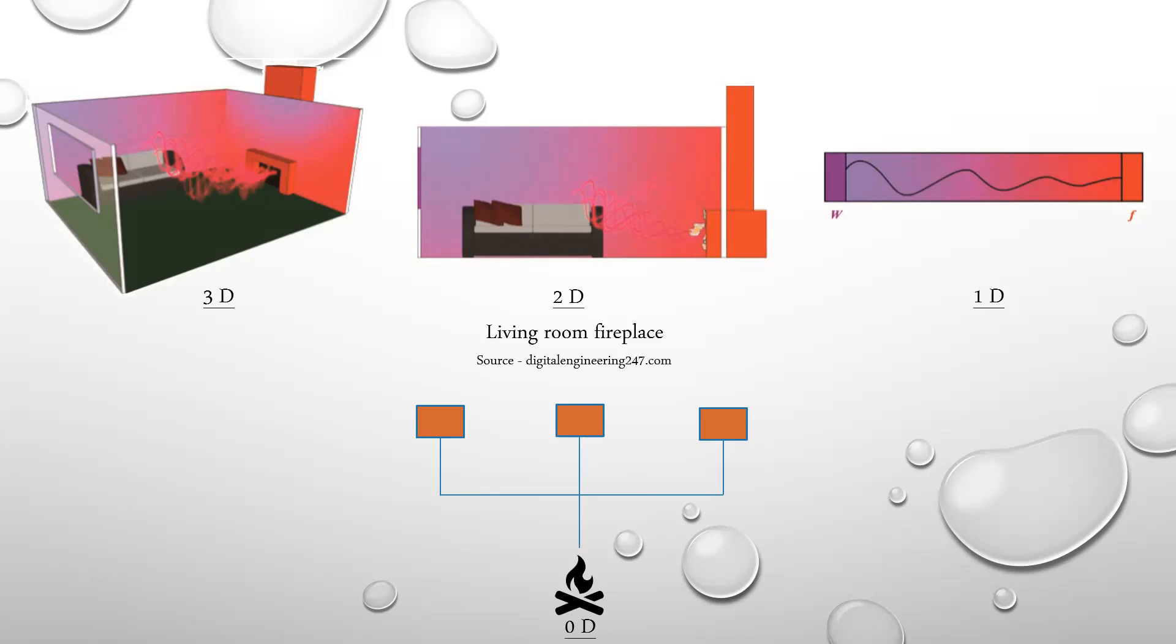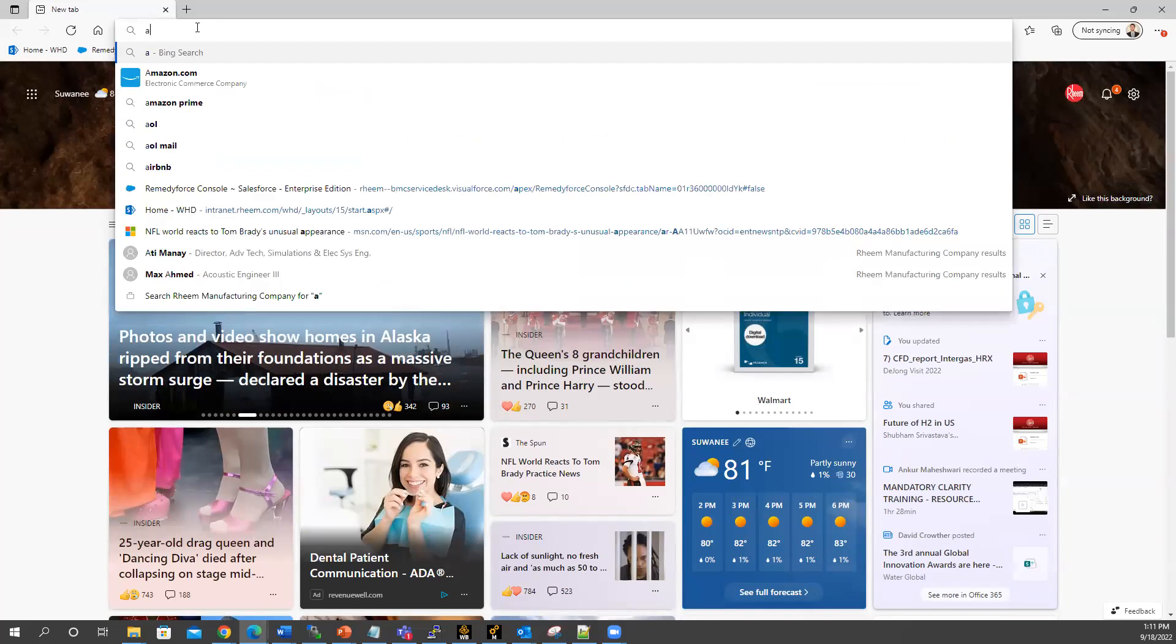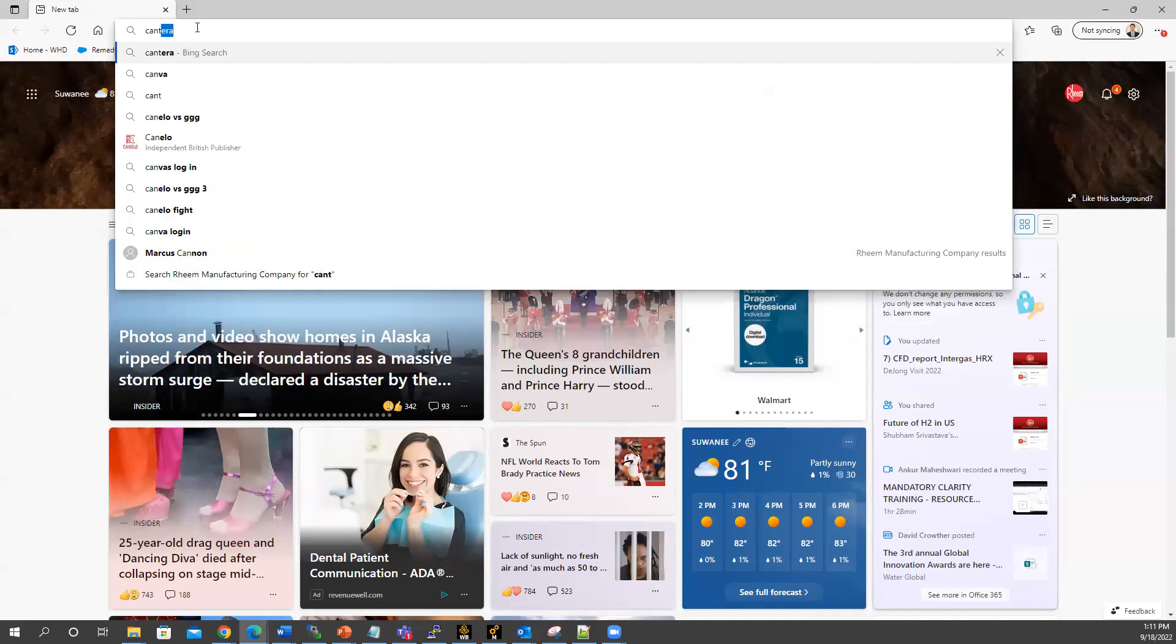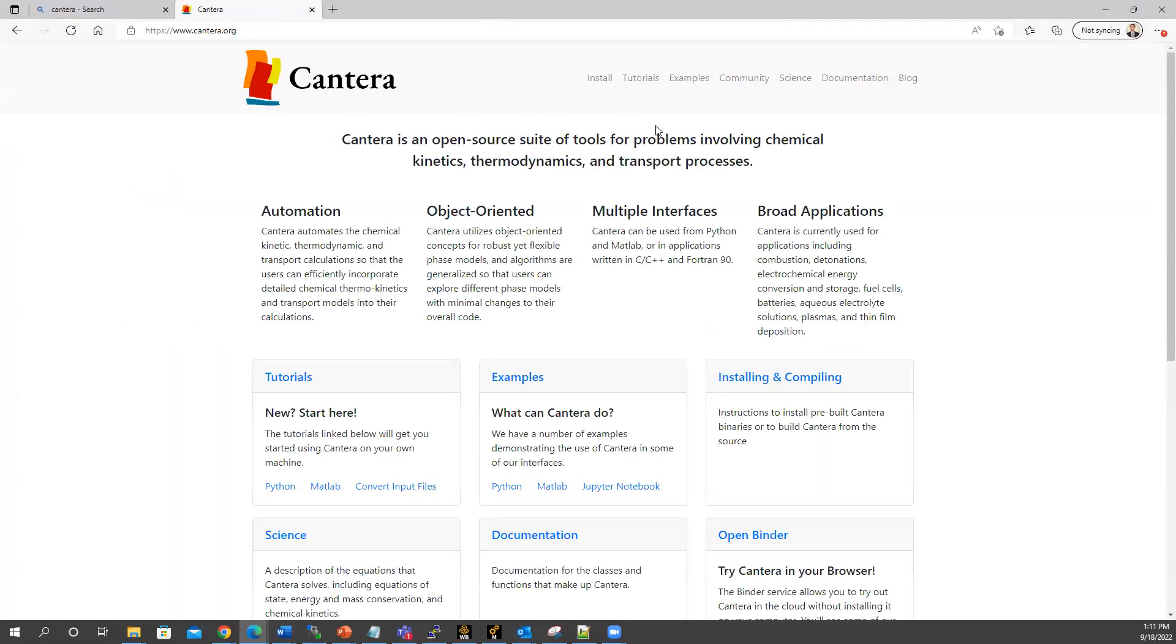Now let us look at the Cantera website, which contains some solid examples that may give you an idea of what we just discussed. So let's open a browser and let's search Cantera. Okay, so that's the first website here. Let's go. This is the official Cantera website. This is an open-source software, so everything here is freely downloadable.